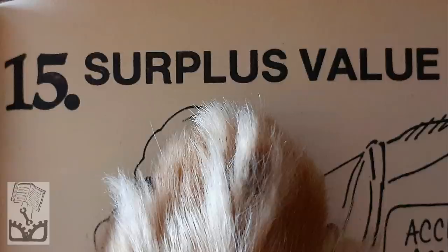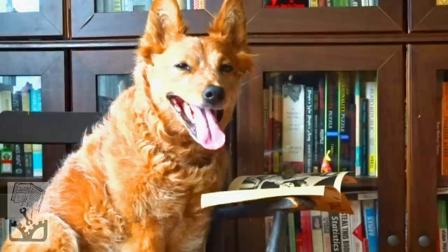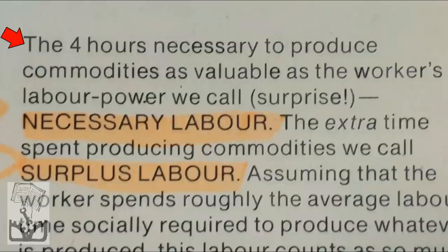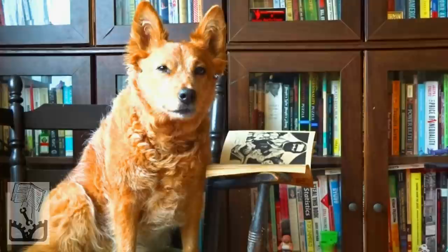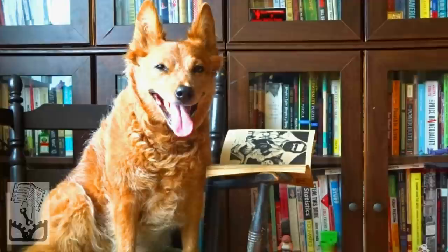Chapter 15: Surplus Value. Having explained how laborers were created, Smith and Evans now address how labor power adds value. They argue: 'The four hours necessary to produce commodities as valuable as the worker's labor power, we call necessary labor. The extra time spent producing commodities we call surplus labor.' Meaning only part of your shift covers the cost of hiring you — the rest of your shift becomes profits, because labor power is the only thing that adds value during the production process.